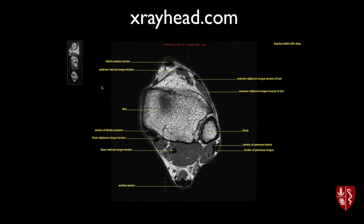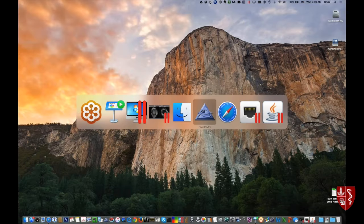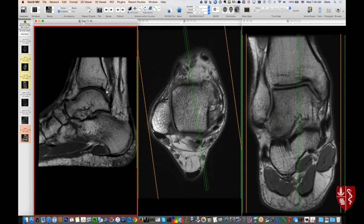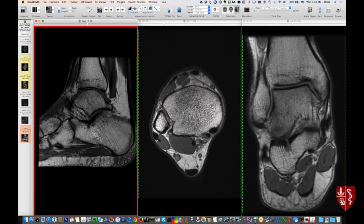There are a bunch of tendons around the ankle. The biggest one is the Achilles tendon posteriorly. Laterally, the peroneal tendons — longus and brevis — going all the way from the calf down to their insertions on the foot. Medially you have tibialis posterior, flexor digitorum longus, and flexor hallucis longus — Tom, Dick, and Harry, remember that from anatomy. There are anterior tendons as well that we'll look at on the MRI.